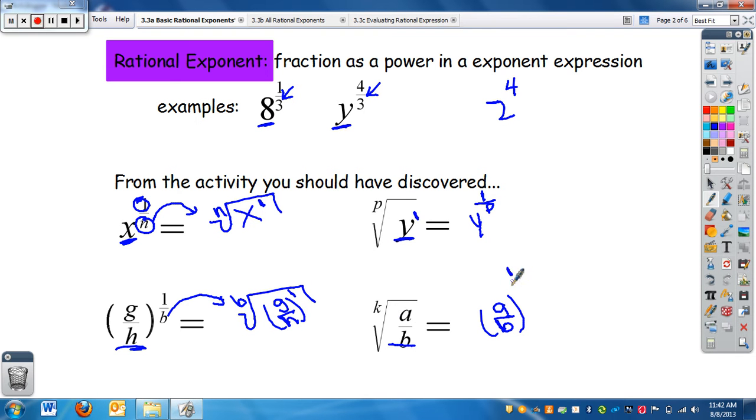My numerator in my radical expression is 1 because this is to the first power, and then my base, or my denominator, is k.